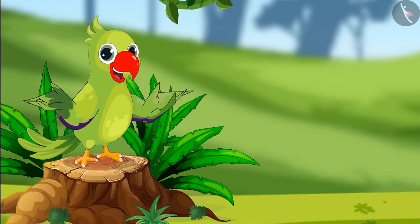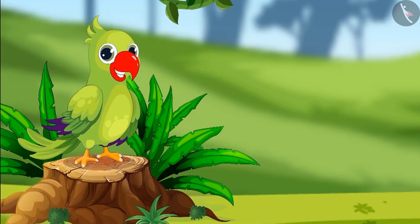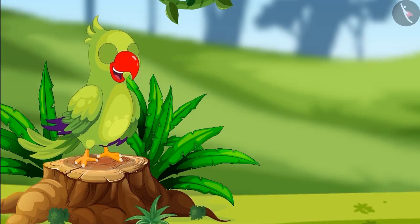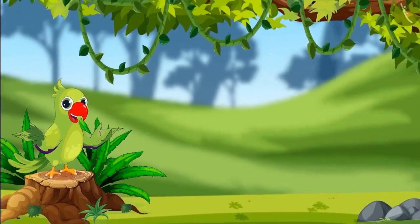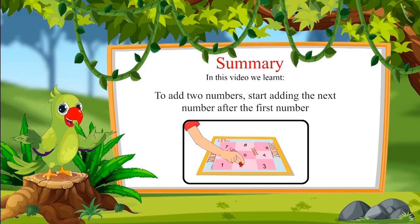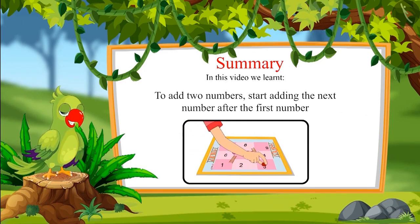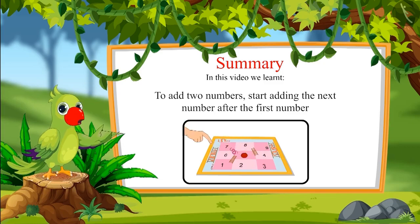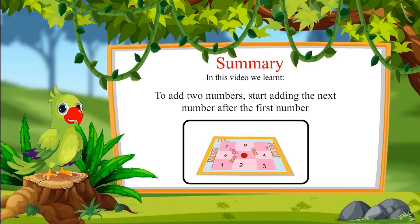Let's start again — this time properly add the numbers on both dice and move your piece forward. So children, I hope you had fun watching the snakes and ladders game. You too can now add two numbers like Chotu and Pinky. In this video we learned that to add any two numbers we need to start adding the next number after the first number. Goodbye friends!